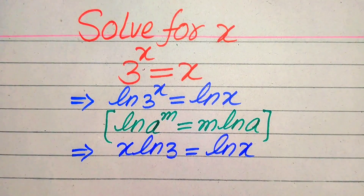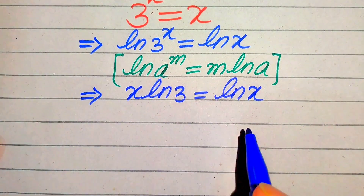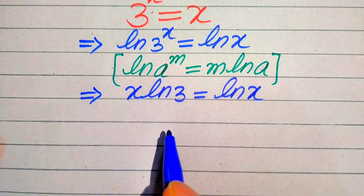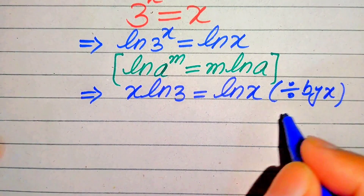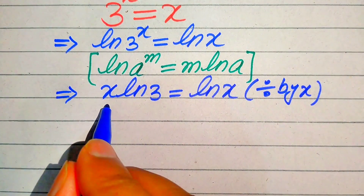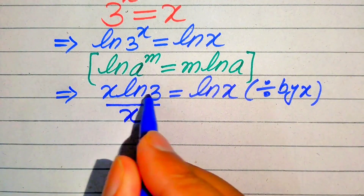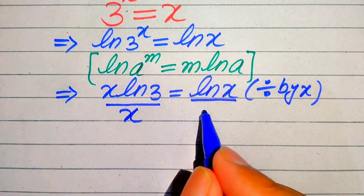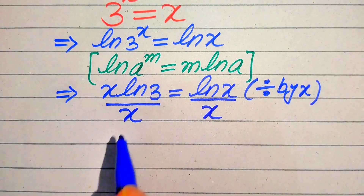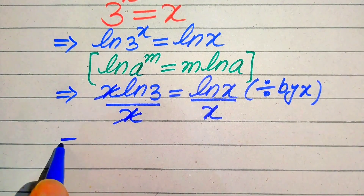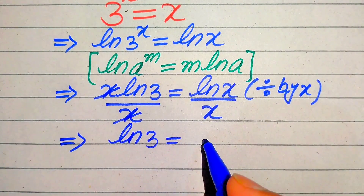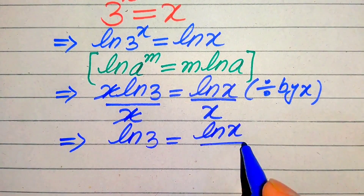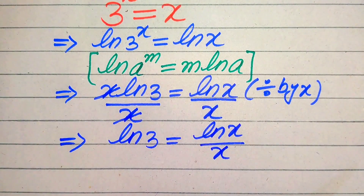In the next step, we move the variable terms to the right hand side. We divide both sides by x on each term. When we divide each term by x, this x cancels out and we get log 3 equals log of x divided by x.